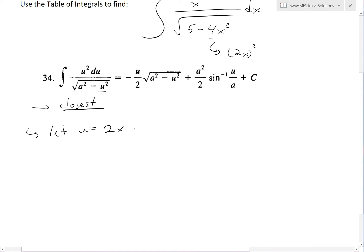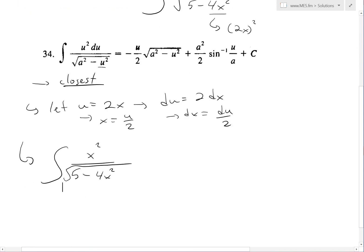So if we let u equal 2x to transform it to look like this formula, what we get is du equals 2 dx. Rearranging this, x equals u over 2 and dx equals du over 2.